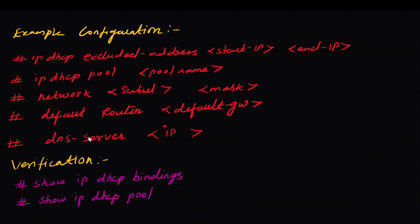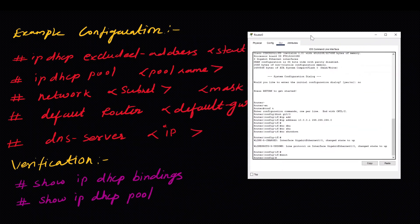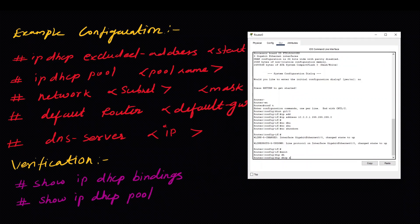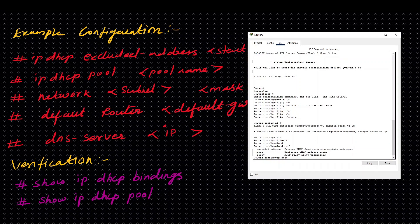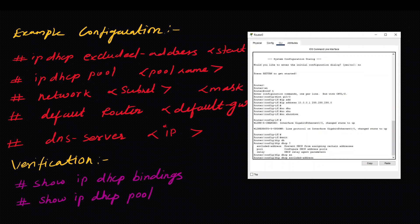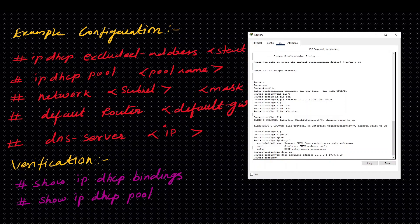Now we can do it. First, we have several options: exclude address, pool, and relay. Now, ip dhcp exclude-address 10.0.0.1 to 10.0.0.10. We will exclude this range.